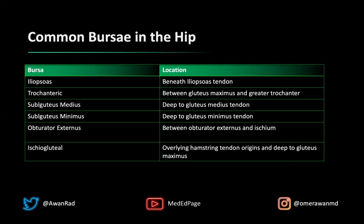The obturator externus and ischiogluteal bursae don't get talked about often, but they're still very important. The obturator externus bursa is between the obturator externus muscle and the ischium. The ischiogluteal bursa is also deep to the gluteus maximus, but it overlies the hamstring tendon origin — where the semimembranosus, semitendinosus, and biceps femoris insert onto the ischial tuberosity — between that space and deep to the gluteus maximus.